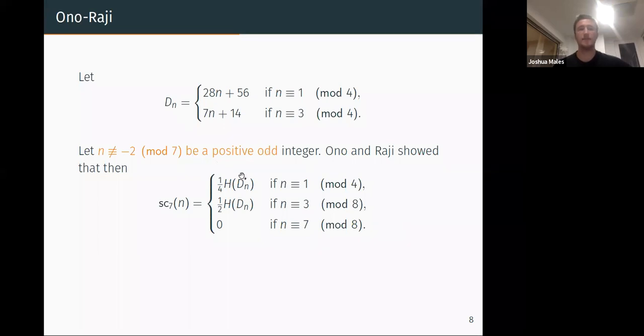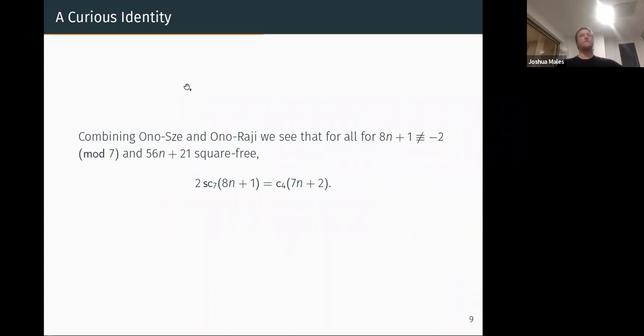Okay, how did they prove this? They only proved this using the modular generating function type arguments, so there's a bit of a gap left. This is something Ken noticed—Ken Ono—and pointed out to me that if we combine these results of Ono-Sze and Ono-Raji we find that for 8n+1 not congruent to 5 mod 7 and 56n+21 square-free, we have some curious identity. On the left hand side we have two times the number of self-conjugate seven-cores on some arithmetic progression equals the number of four-cores on a different arithmetic progression. Why should this be true? This was my major motivation for studying these problems.